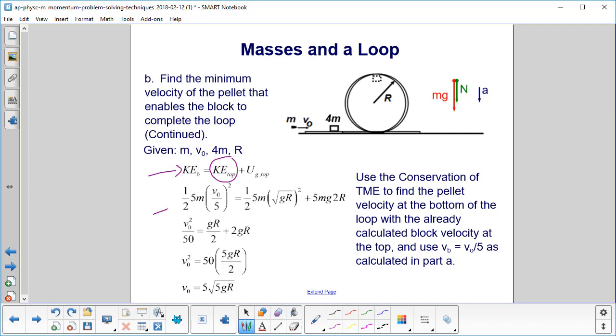So let's start at the bottom. We have 1/2 times 5m times (v0 over 5) squared. So look what we did there. We already replaced v bottom with v0 over 5. At the top, it's 1/2 times 5m, the mass.